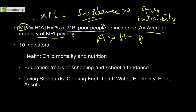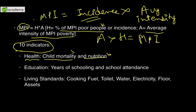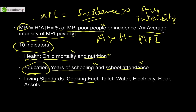There are 10 indicators across three dimensions. Under health: child mortality and nutrition level. Under education: years of schooling and school attendance. Under living standards: cooking fuel, toilet, water, electricity, floor, and assets. Knowing these is useful for MCQs asking which indicator is not included, and for essay answers it demonstrates thorough knowledge.